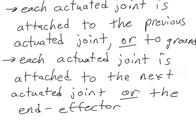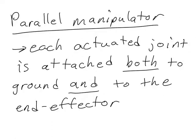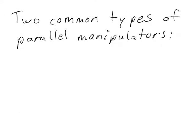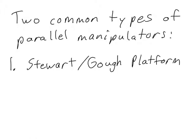The parallel manipulator is different. In a parallel manipulator, each actuated joint is attached both to the ground and to the end effector. There are two common types of parallel manipulators.